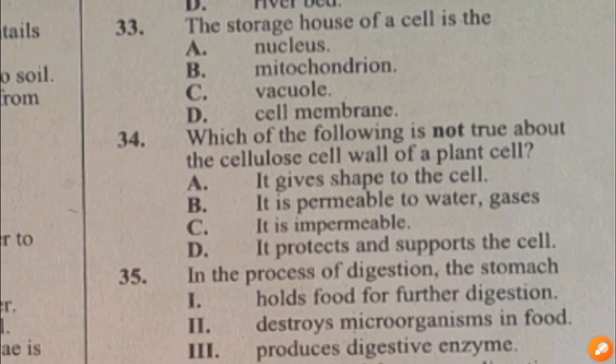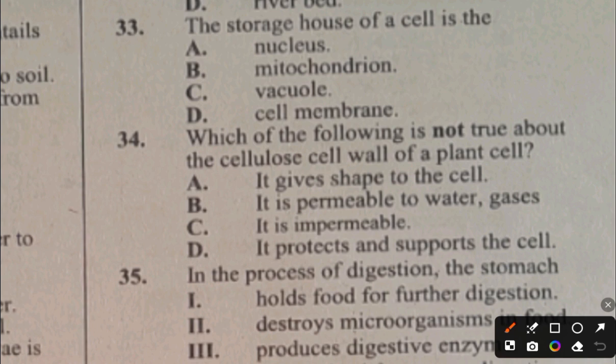Question 34. Which of the following is not true about the cellulose cell wall of plant cells? A. It gives shape to the cell, B. It is permeable to water, C. It is impermeable, D. It protects and supports the cell. The answer is C — the statement that it is impermeable is not true, as the cell wall is actually permeable.